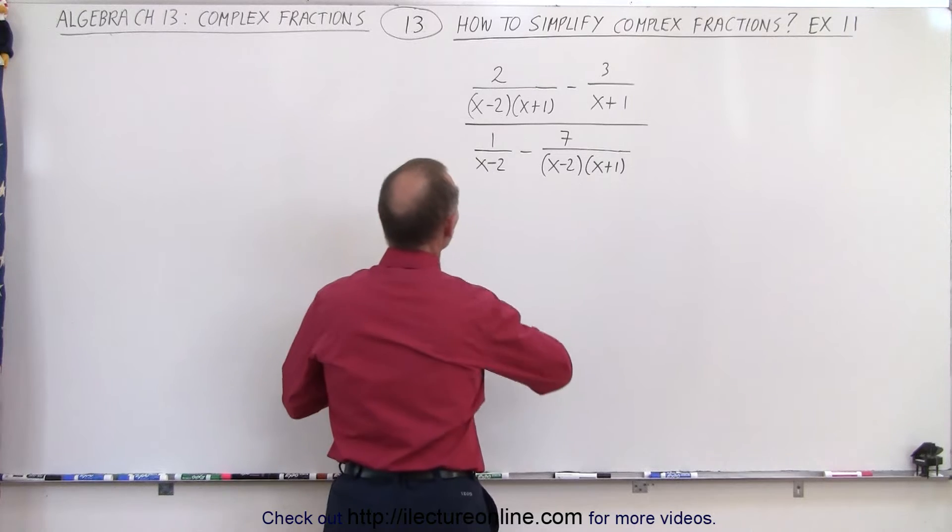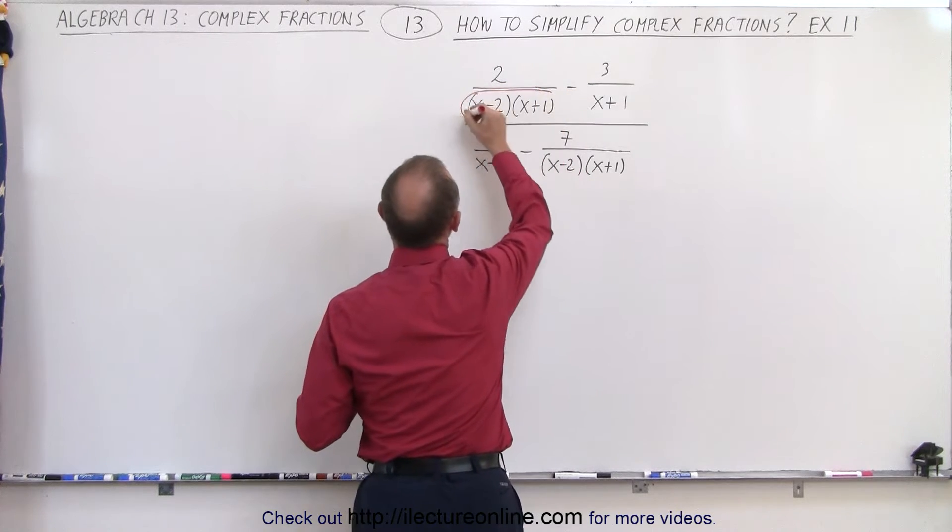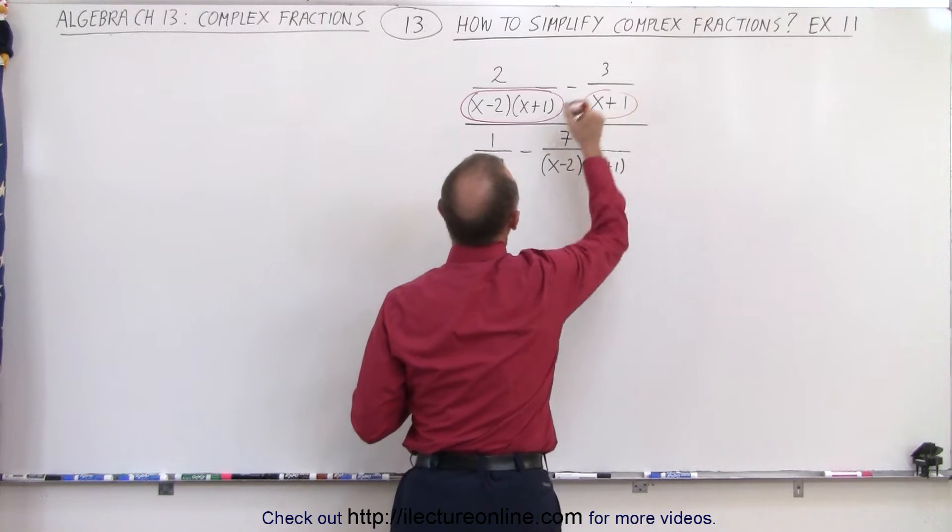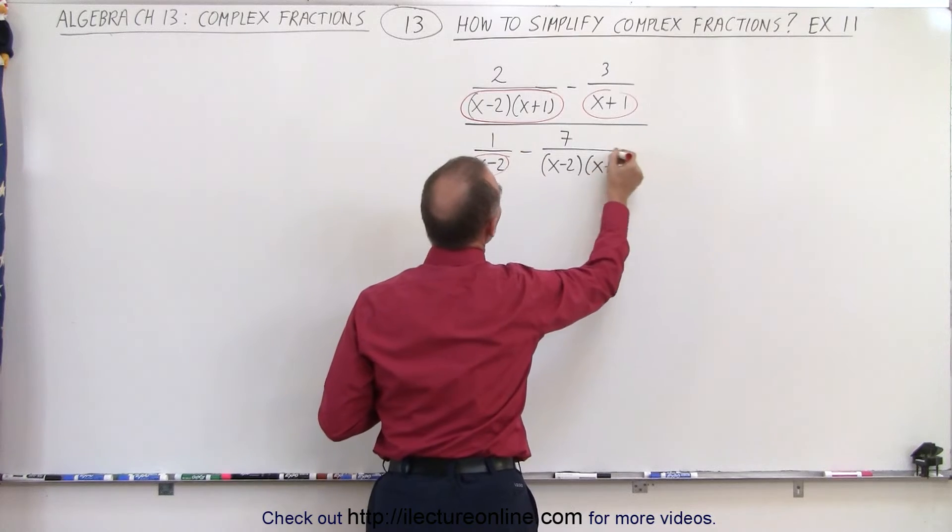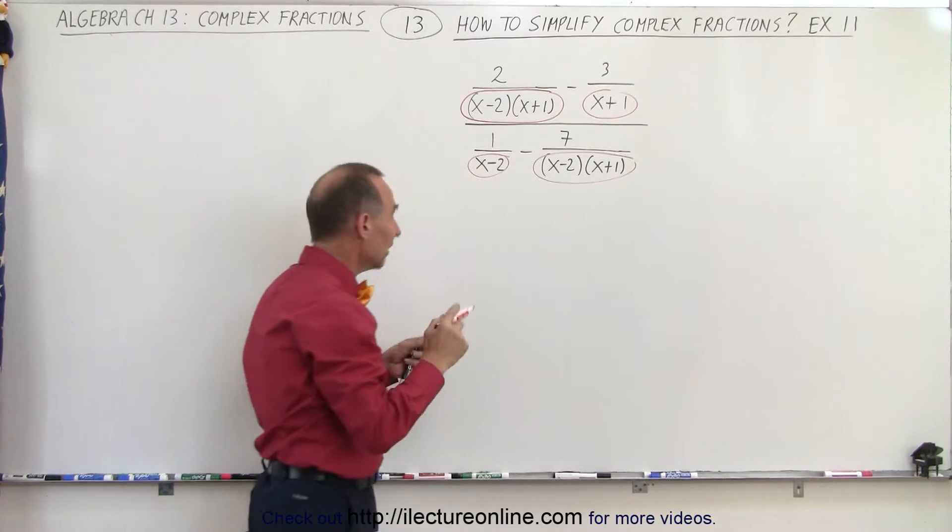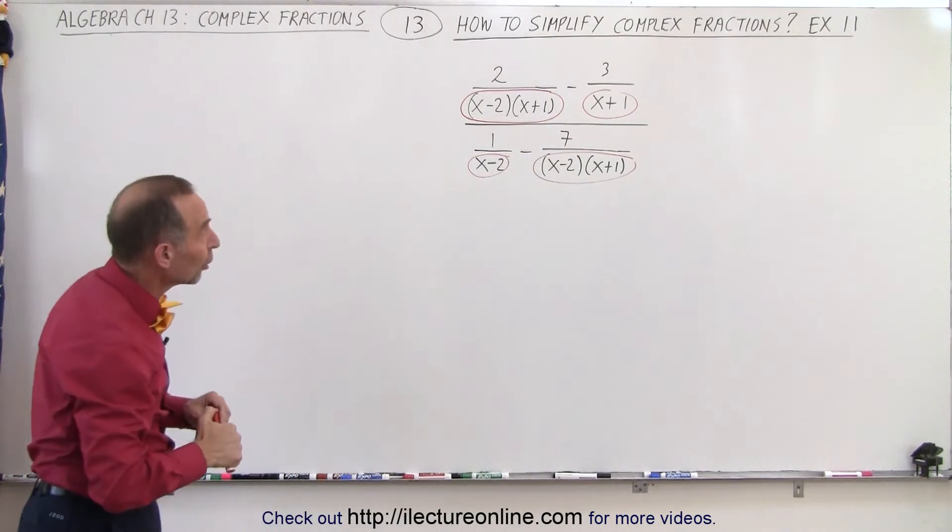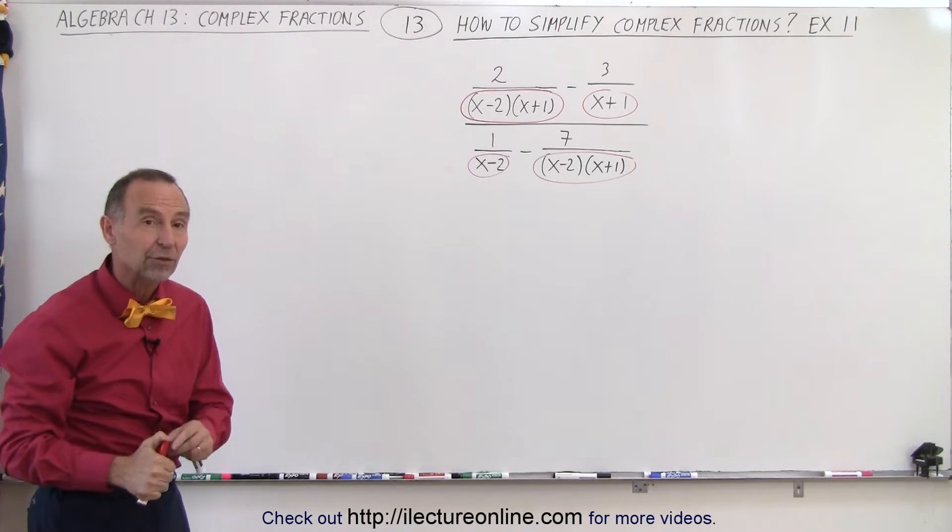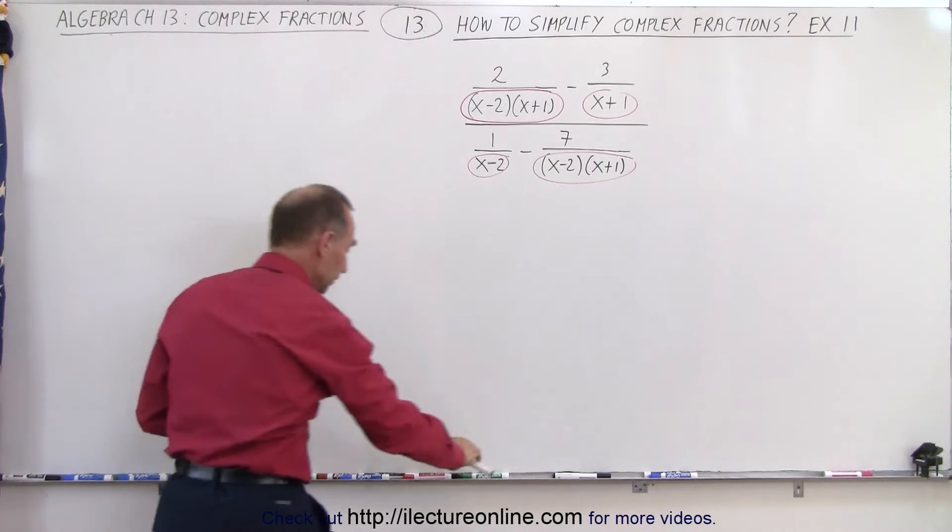So let's circle all our denominators. So we have the first one, second one, the third one, and the fourth one. And notice that in this case it becomes obvious that the lowest common denominator is indeed the product of x minus 2 and x plus 1.